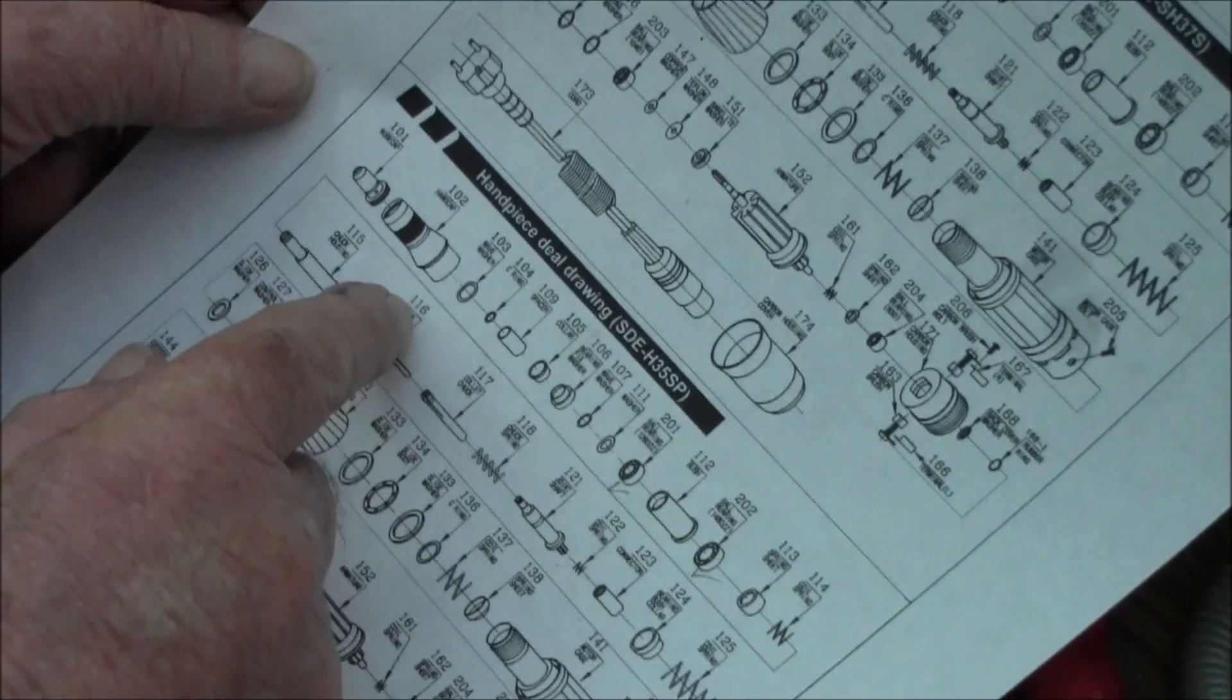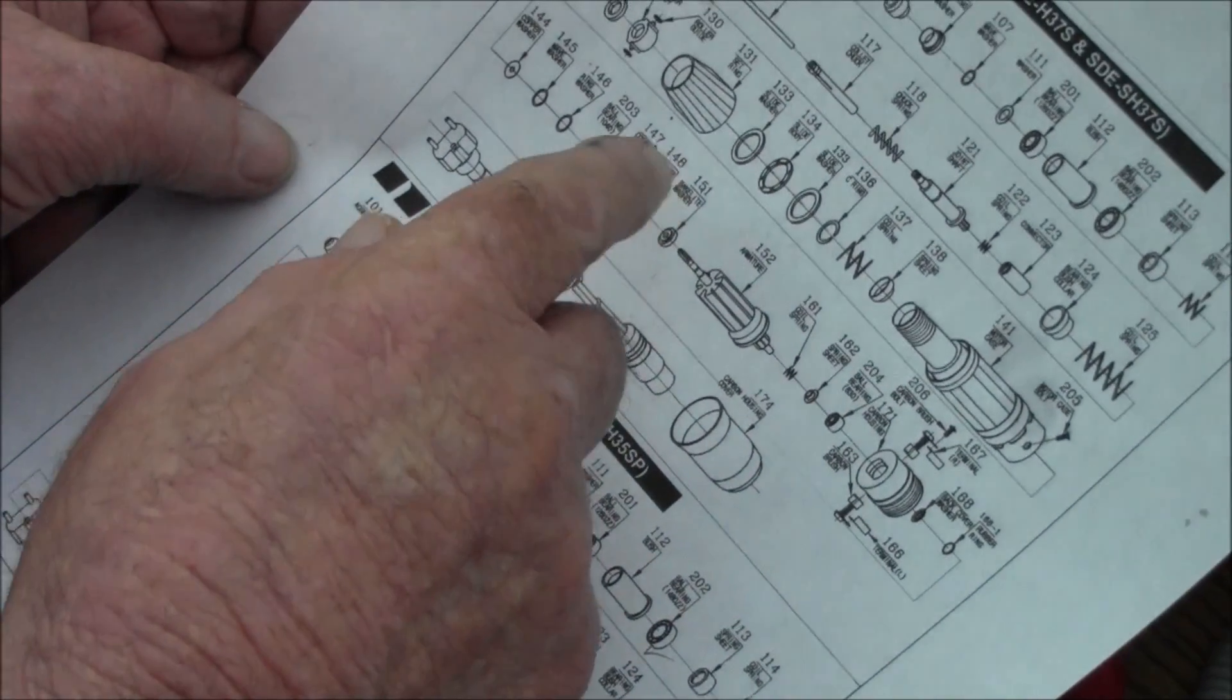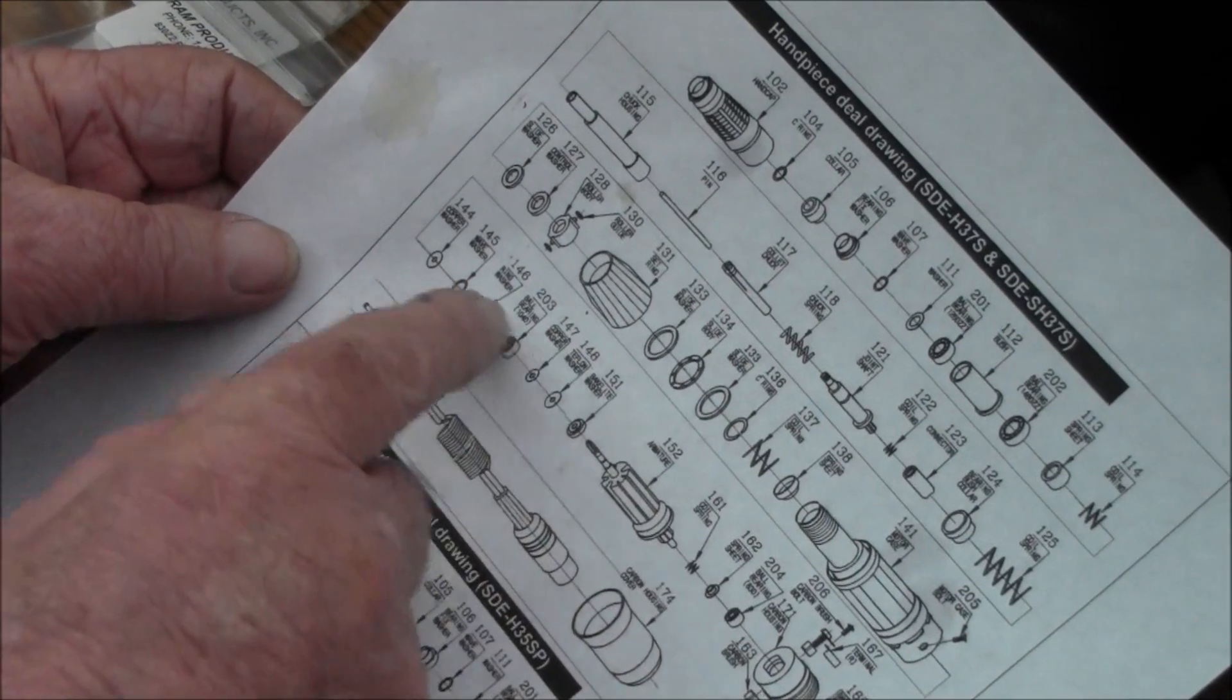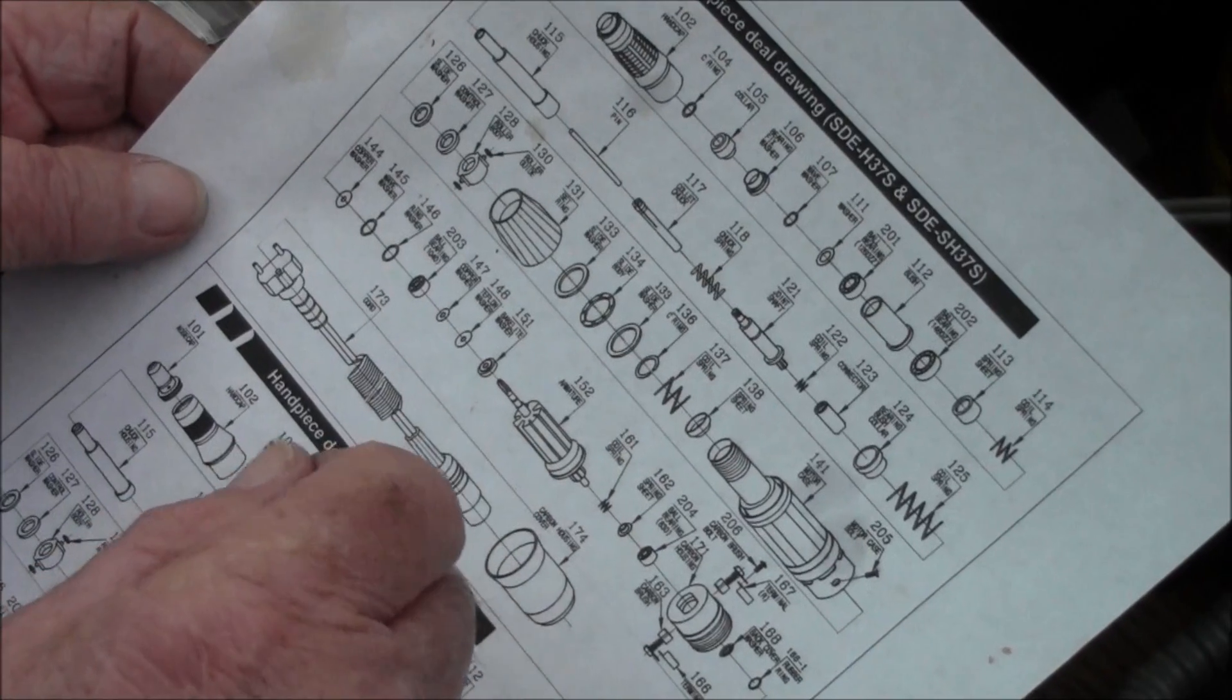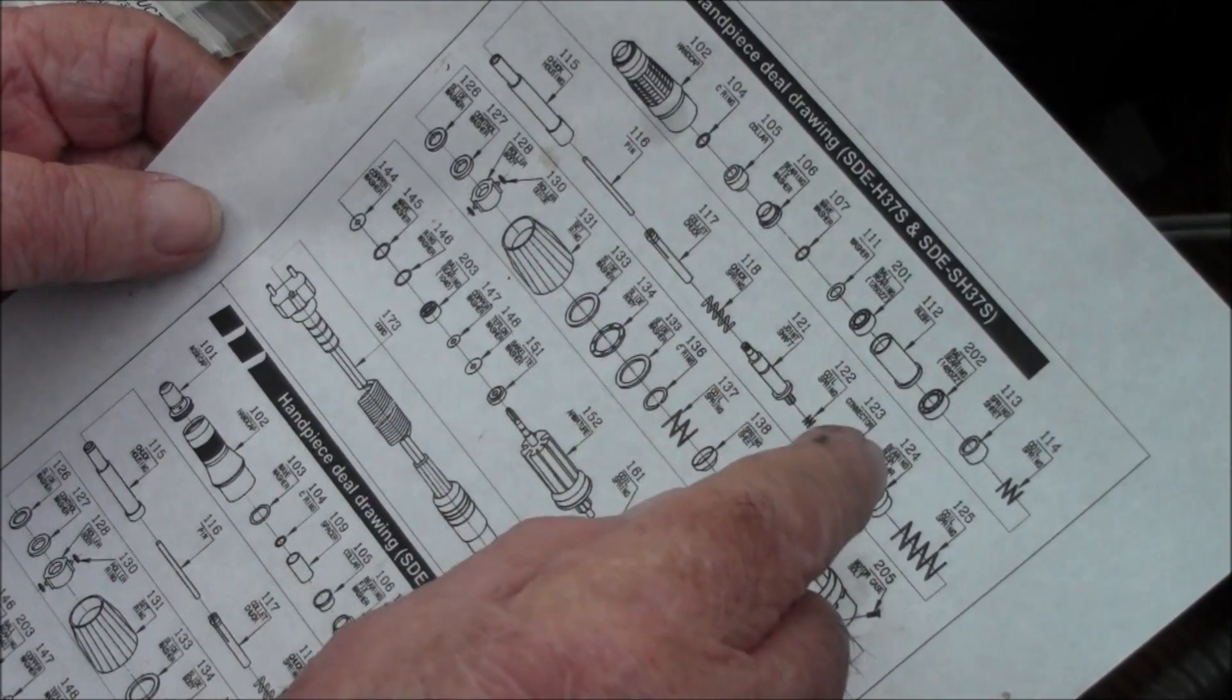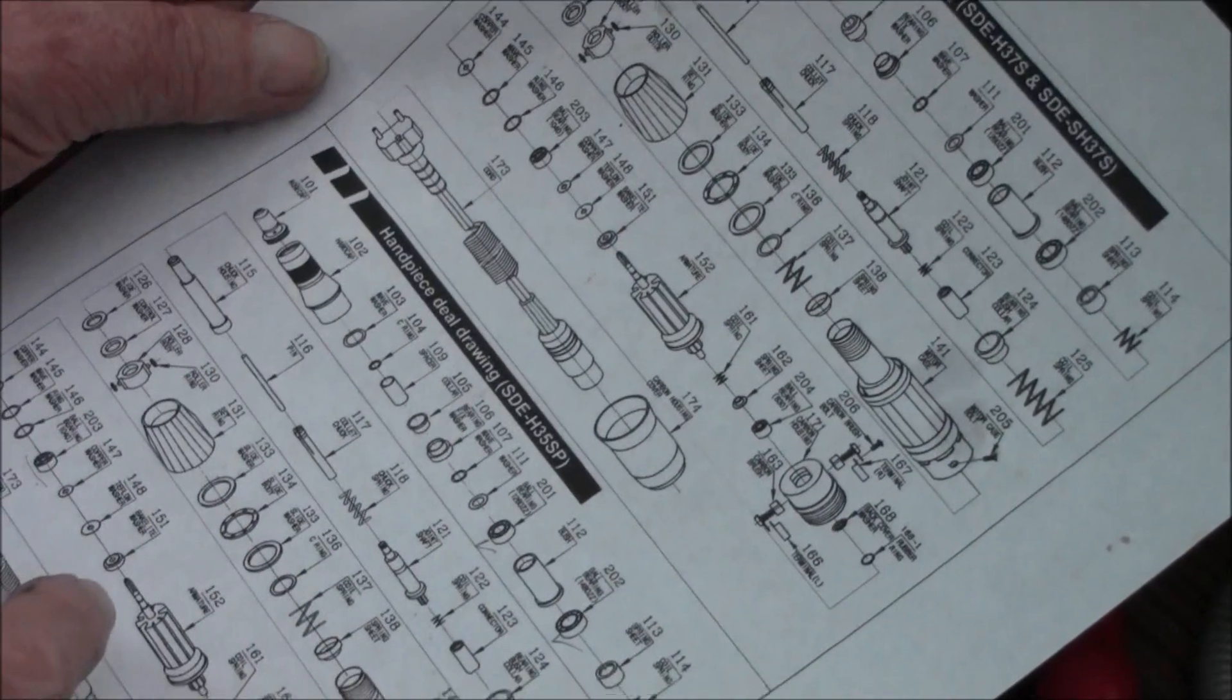This one's a little different appearance, but the part numbers are the same. This is for the 45,000 RPM. This shows all the parts. The only thing I found different is this one bearing.